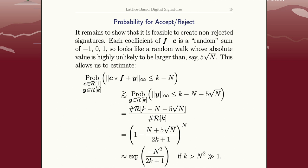So the probability that Alice finds a signature that's good is bigger than the probability for the Ys that the coefficients of Y are no more than K minus N minus 5 root N, which is how big this thing is. This is just a triangle inequality.